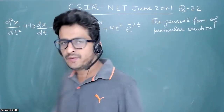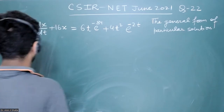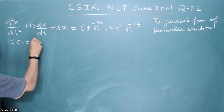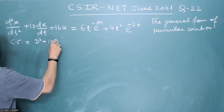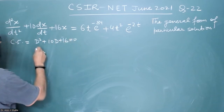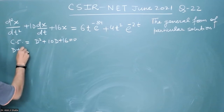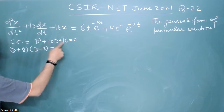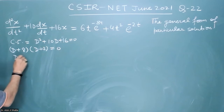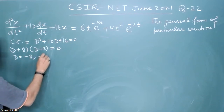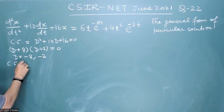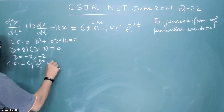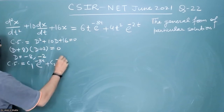So how do we solve this equation for the particular integral? For the complementary function, we know that this is very simple. We will just write D² + 10D + 16 = 0 and we will get (D + 8)(D + 2) = 0 by solving this equation. So the complementary function will simply be c₁e^(−8t) plus c₂e^(−2t).